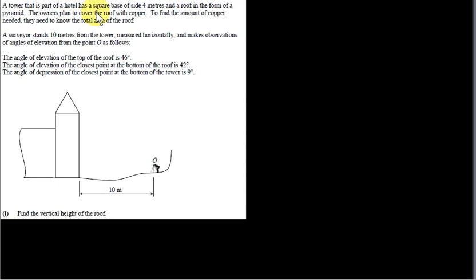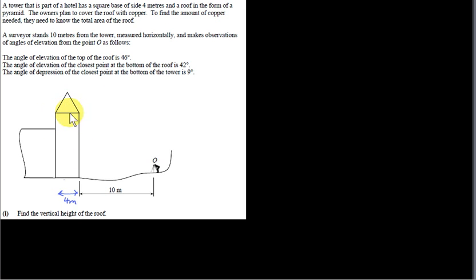A tower that is part of a hotel has a square base of side four meters. The base is square with a side of four meters. It has a roof in the form of a pyramid — presumably a regular pyramid. The owners plan to cover the roof with copper. To find the amount of copper needed, they need to know the total area of the roof. This pyramid sits on a square base, and since the tower doesn't taper, that square base has exactly the same shape as the square base at the bottom of the tower.